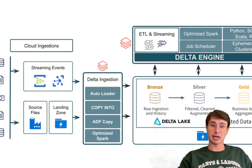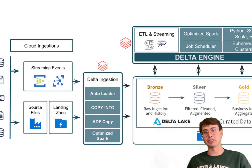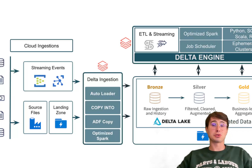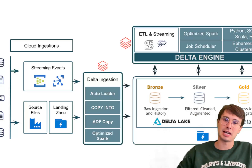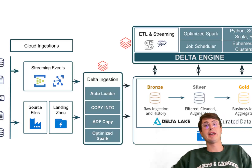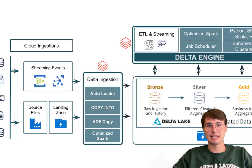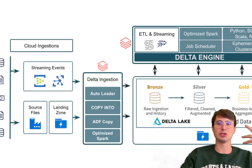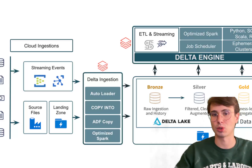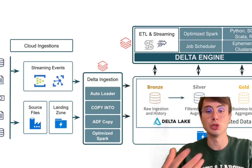On the cons side: number one, complexity — Delta Lake introduces additional complexity compared to traditional data lakes, especially for organizations not already familiar with Apache Spark. Two, resource intensive — with all its advanced features like ACID transaction checking, time travel, and maintaining historical snapshots, it requires a pretty large amount of computational and storage resources. Three, Spark dependency — while you can theoretically use it with other platforms, it's very closely tied to Apache Spark, so if you're not already using Spark, adopting Delta Lake will be pretty challenging. Four, learning curve — implementing Delta Lake requires a good understanding of its architecture and features, and there's a lot you can do wrong, making it a significant learning curve for teams new to this kind of technology.